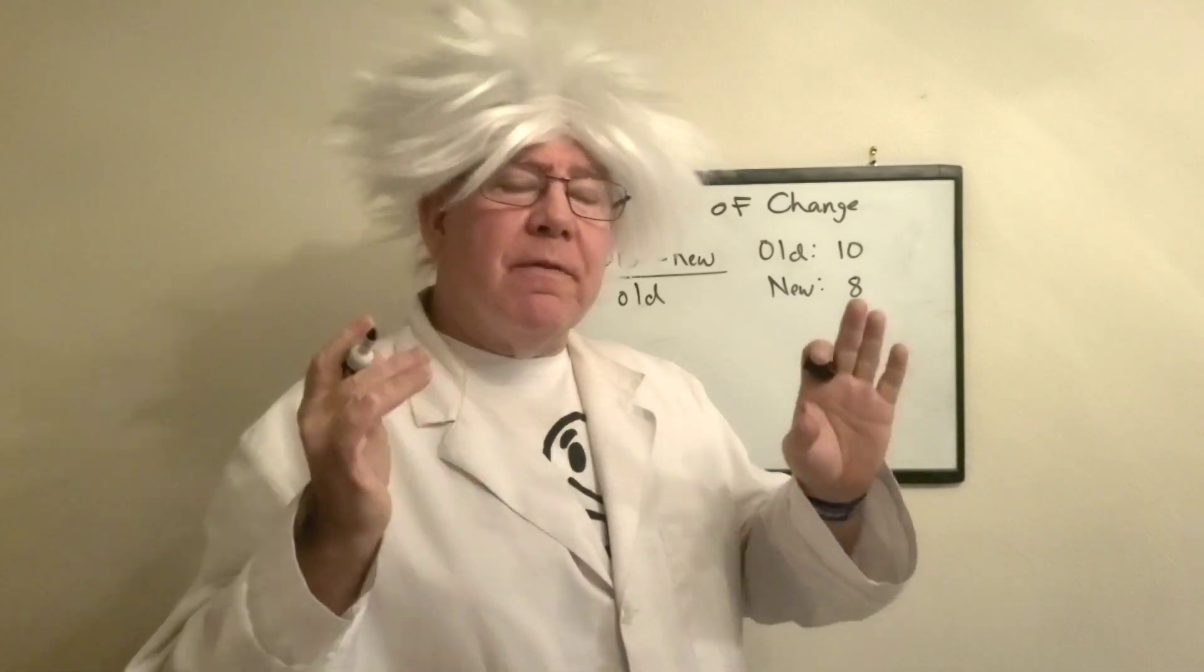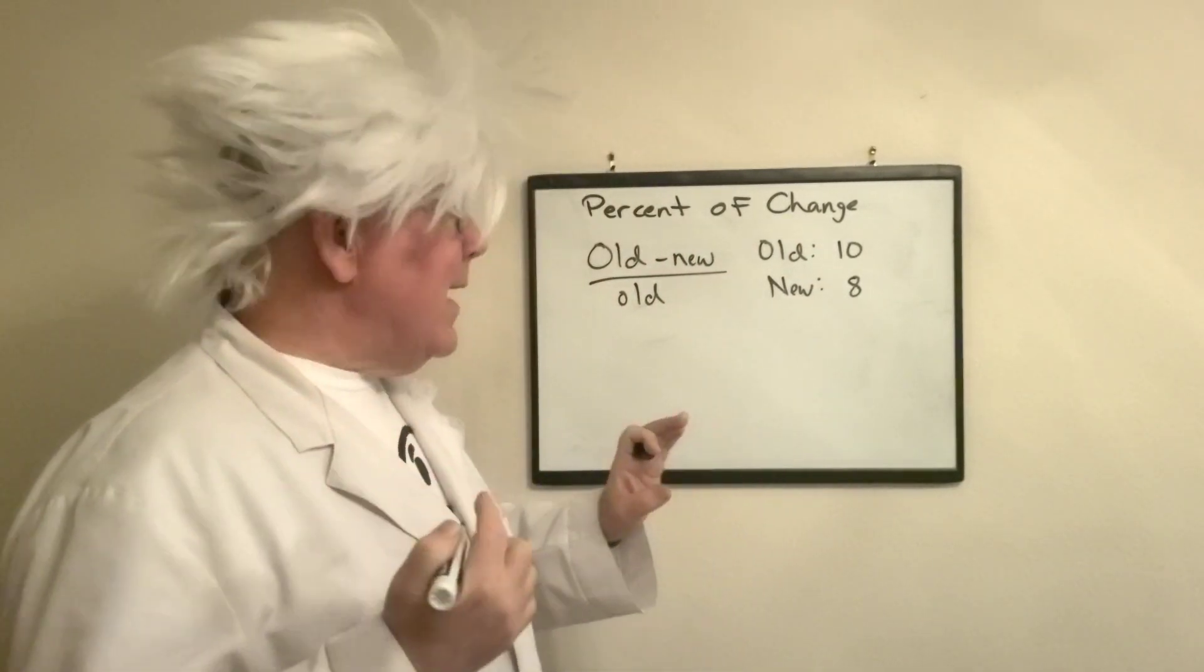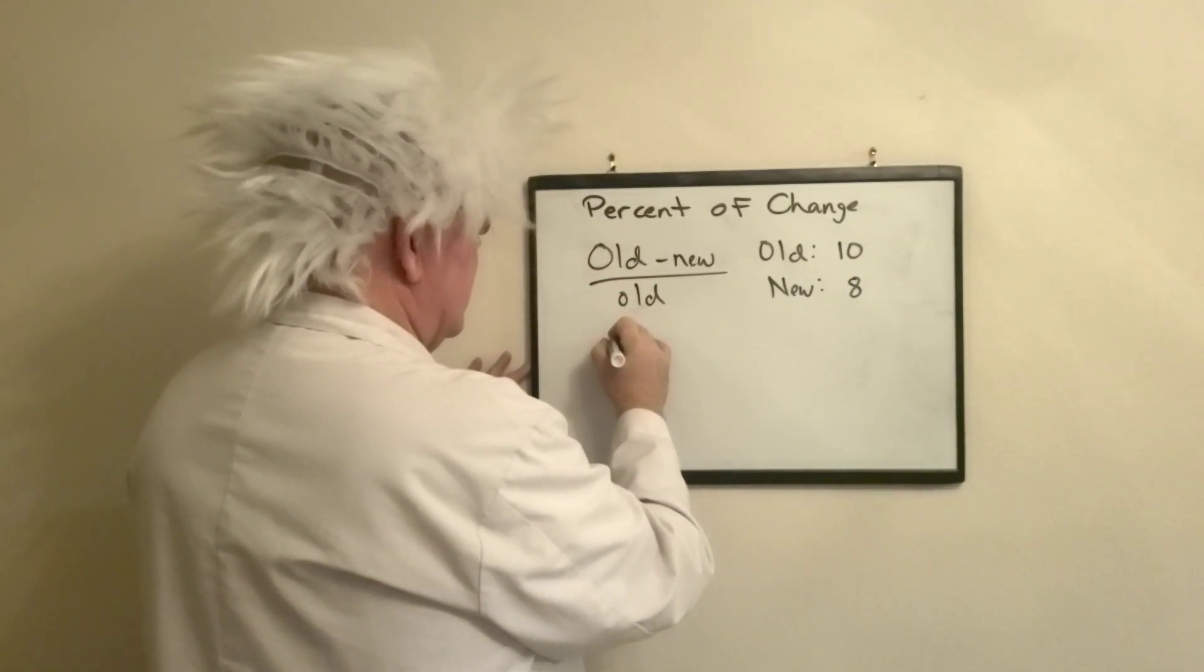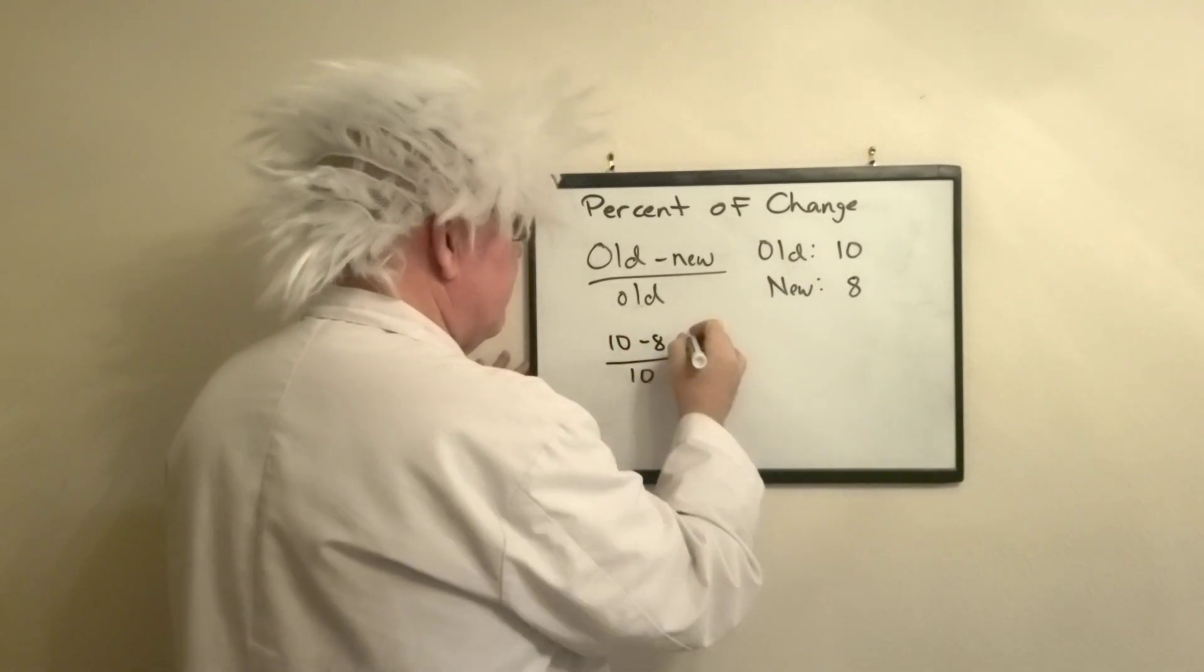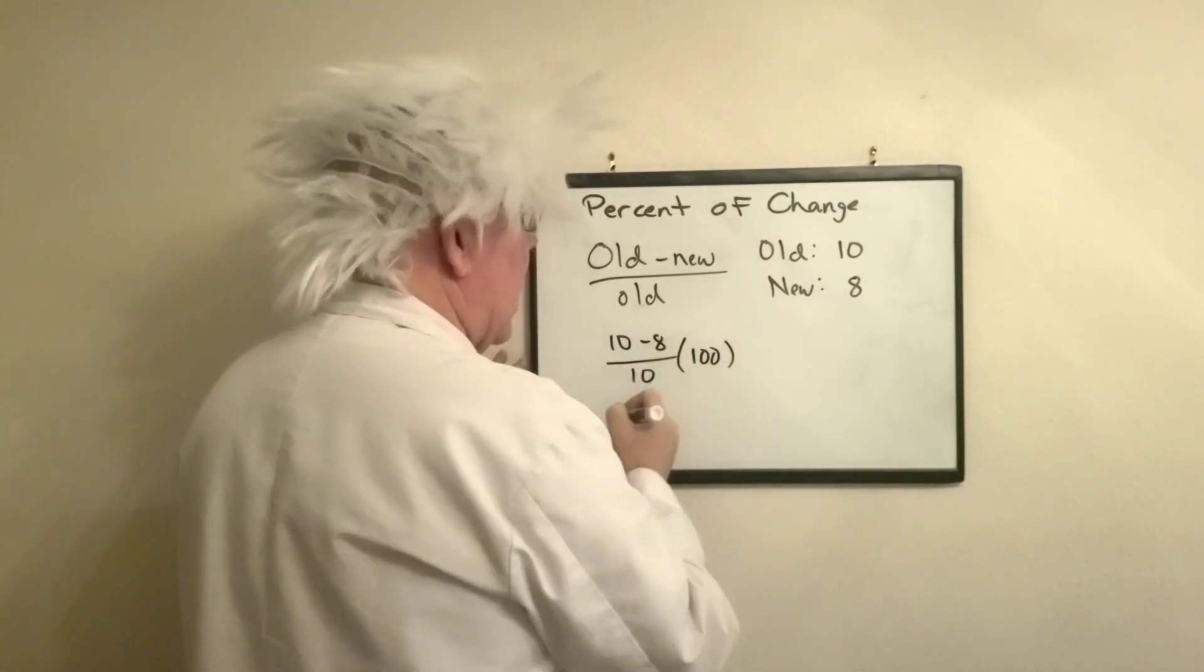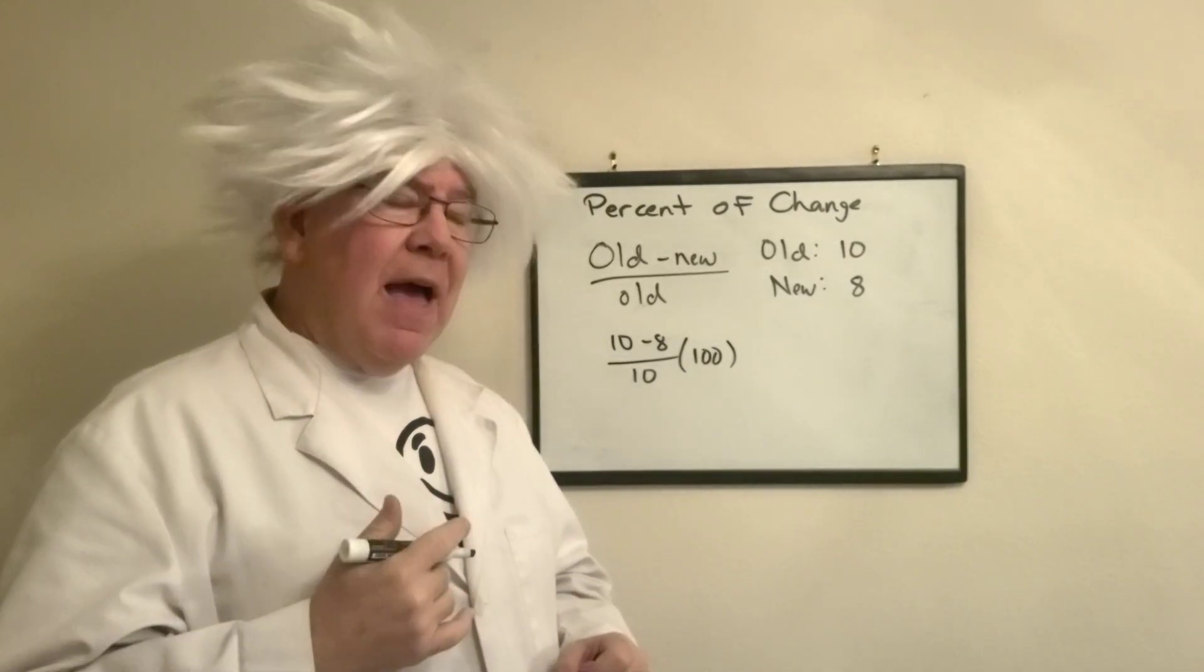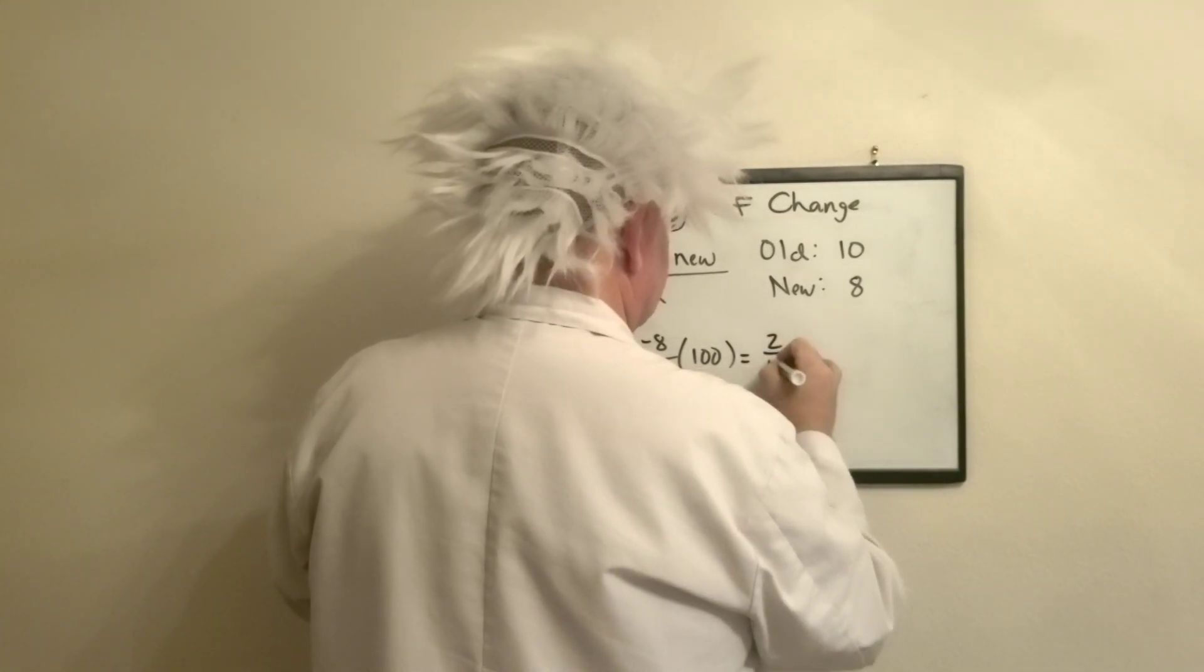So here's what we're going to do. We're going to find the change in numbers from their old value to their new value. So I'm going from 10 to 8. My old value is 10, my new value is 8 over my old value. To find the percent of change, I will multiply this by 100. This will give me the value.